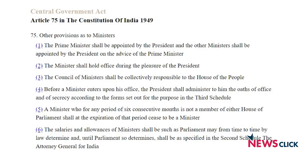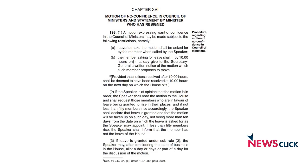A no-confidence motion is a simple one-line motion. It is governed by Article 75 of the Constitution, which says that the council of ministers is accountable to members of Parliament, largely the Lok Sabha. Under Rule 198 of the Lok Sabha, a member of Parliament can show no confidence to the council of ministers, and this can be taken up in the Lok Sabha if 50 members give their assent. The Speaker first asks if 50 members are ready, and then the no-confidence motion can be adopted.